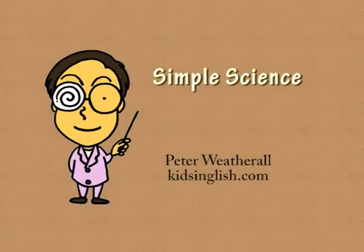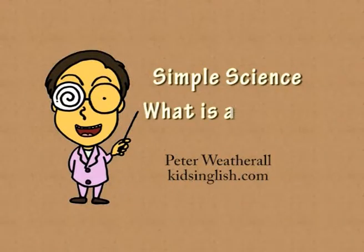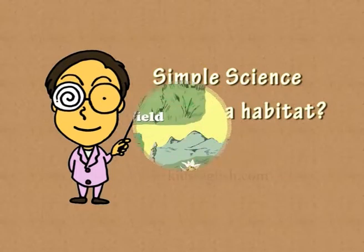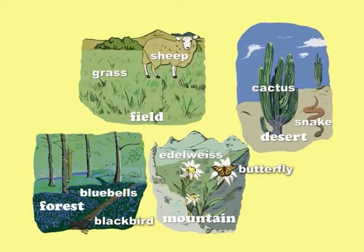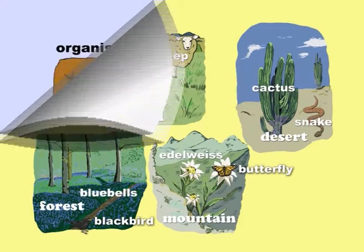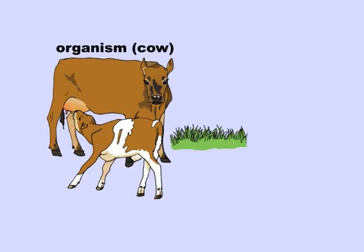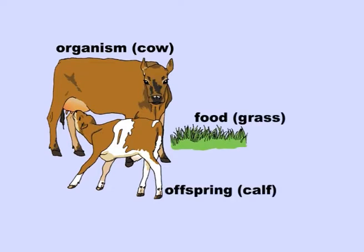What is a habitat? A habitat is the place where an organism lives. An organism can be a plant or an animal. An organism lives where it can find food and produce offspring.